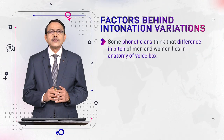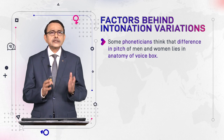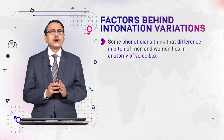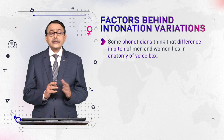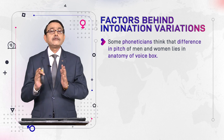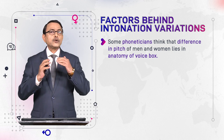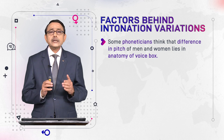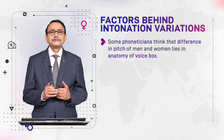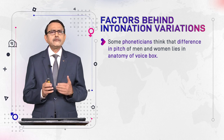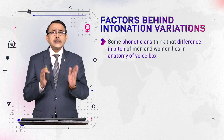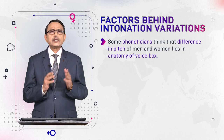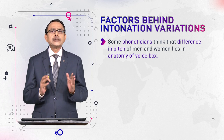Some phoneticians — phoneticians are those scholars and researchers who work in the field of phonetics, which studies the physical properties of speech sounds — think that the difference in pitch of men and women lies in the anatomy of the voice box. Below the chin there is a projected area, especially visible in males and almost invisible in females. This bony, box-like structure is called the larynx in technical language, or simply the voice box.